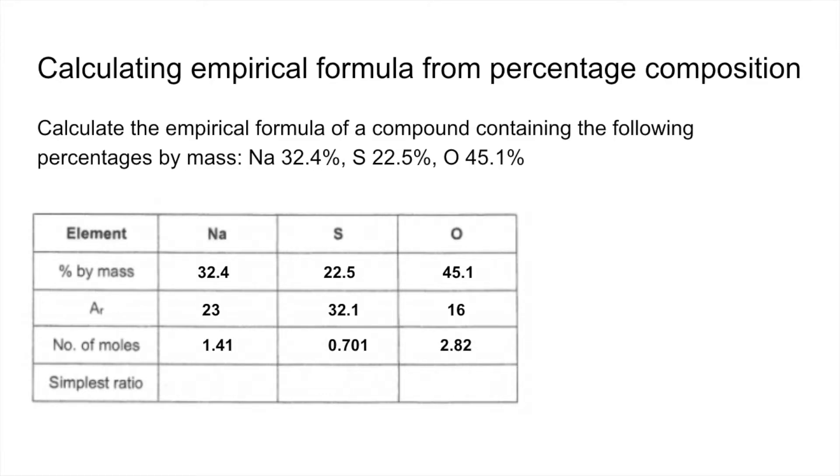And then divide by the smallest, which in this case is that middle one, 0.701. So we get a 2.01 to 1 to 4.02 ratio.